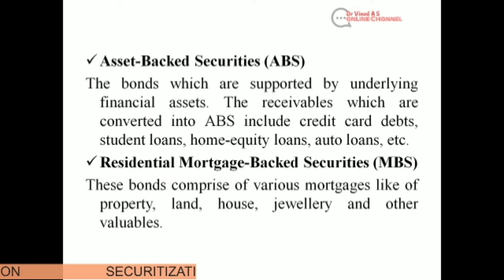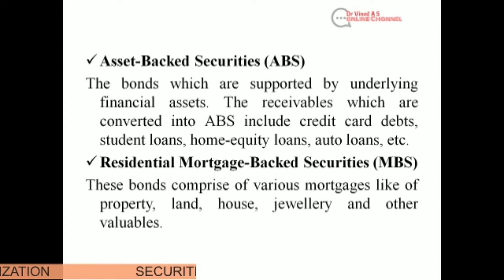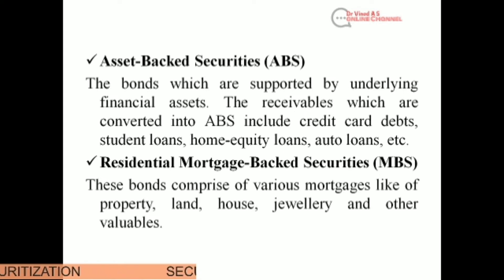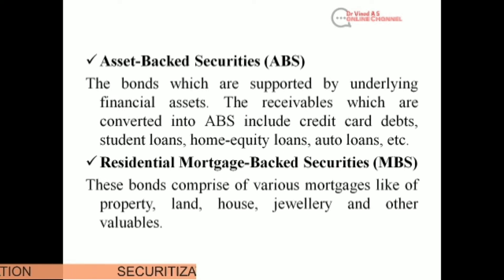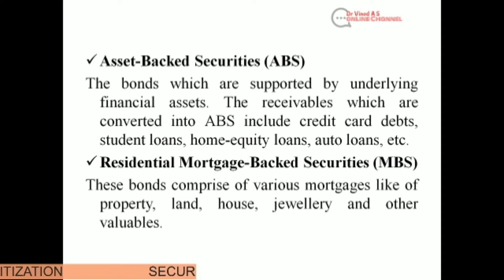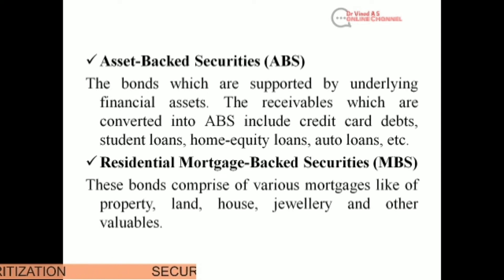The second type is Residential Mortgage-Backed Securities or RMBS. These are bonds comprising mortgages such as property, land, house, jewelry, and other valuables. So any residential assets like land, property, or jewelry that come under the bond category fall under residential mortgage-backed securities.